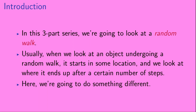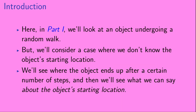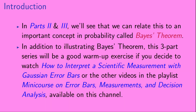In this three-part series, we're going to look at a random walk. Usually, when we look at an object undergoing a random walk, it starts in some location and we look at where it ends up after a certain number of steps. Here, we're going to do something different. In Part 1, we'll look at an object undergoing a random walk, but we'll consider a case where we don't know the object's starting location. We'll see where the object ends up after a certain number of steps, and then we'll see what we can say about the object's starting location. In Parts 2 and 3, we'll see that we can relate this to an important concept in probability called Bayes Theorem.